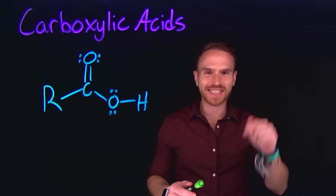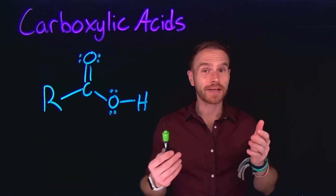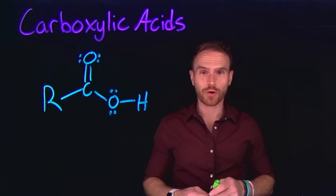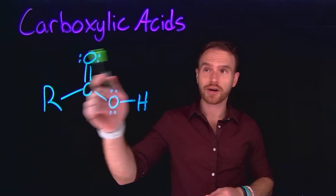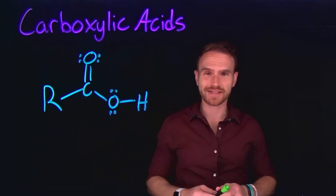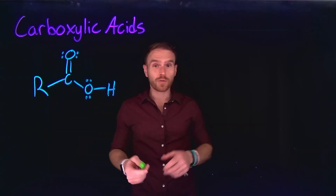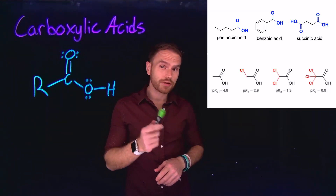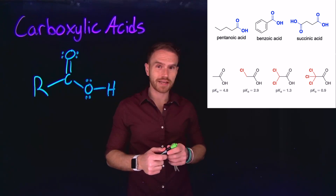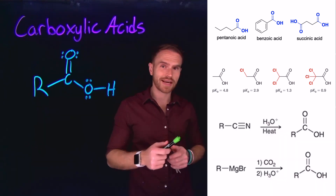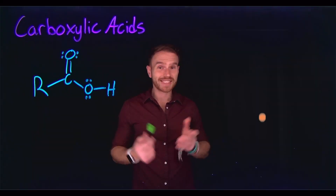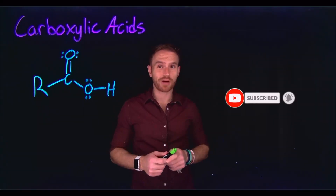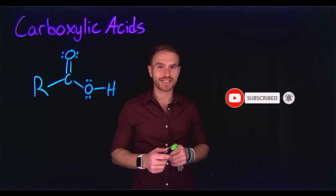Today we're learning about an incredibly important class of molecules in organic chemistry: carboxylic acids. Specifically, we're going to investigate their nomenclature, their structure, and how that impacts the acidity, as well as how to synthesize them. Stick around to the end because I have some practice problems that should help for your next exam.